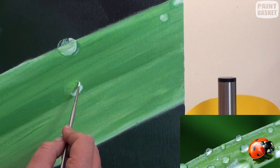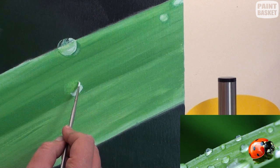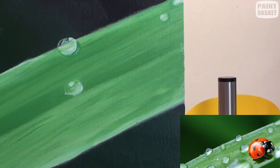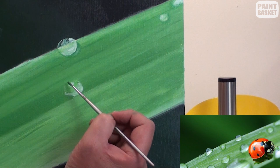Then add a highlight to the bottom of the drop using white, which you then fade upwards into the water drop. Next add a reflection of the leaf using the dark leaf color to the top of the water drop, and you also shade that into the water drop. Those two shadings will make the water drop look round.